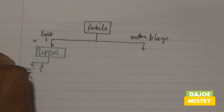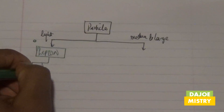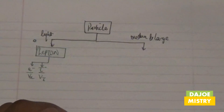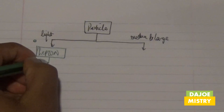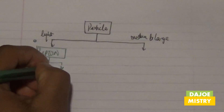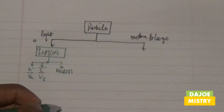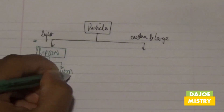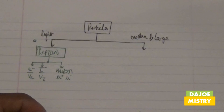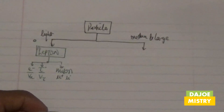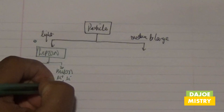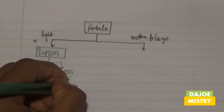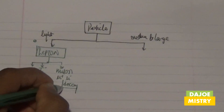The unstable form of leptons is called the muon. The muon consists of two forms: we can have the muon positive or the muon negative. Muons are known to be the unstable form of leptons, and muons can decay because of their instability — they need to be stable, so they decay and form three types of particles.